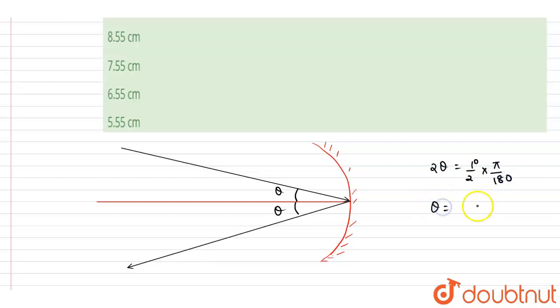So theta will be equals to pi. If you see this is 360 into 2, it will be 720. This much radian is this angle.